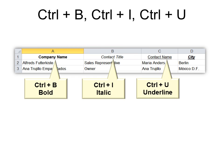Ctrl+B, Ctrl+I, Ctrl+U. These are very easy: bold, italic, and underline. These work the same in all programs. You can see I used all three on this one. So before you're typing, do Ctrl+B and then everything you type will be bold. When you're done, hit Ctrl+B again — it's a toggle switch and it turns it back off. It's very convenient if you're doing a lot of typing instead of taking your hands off the keyboard.